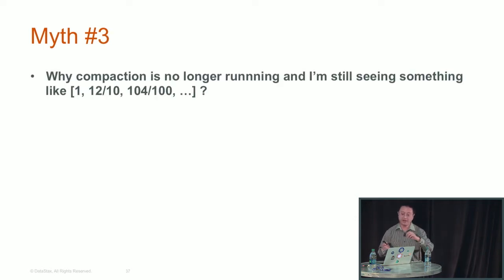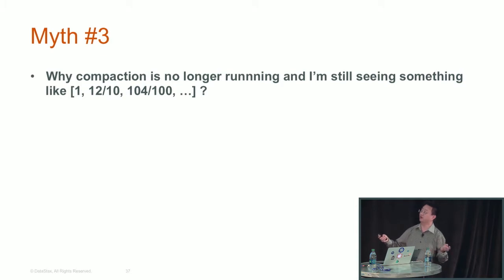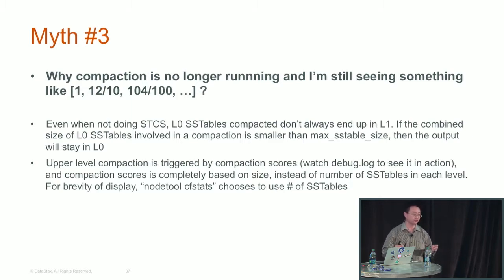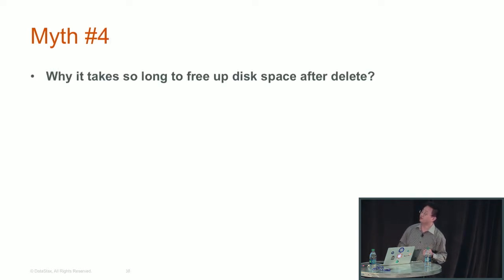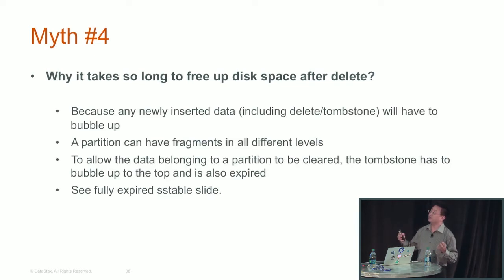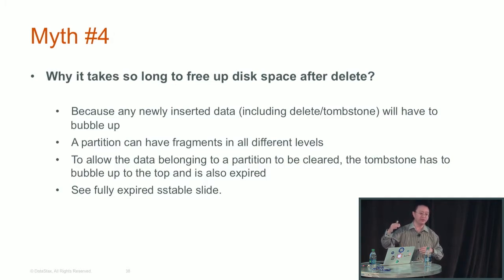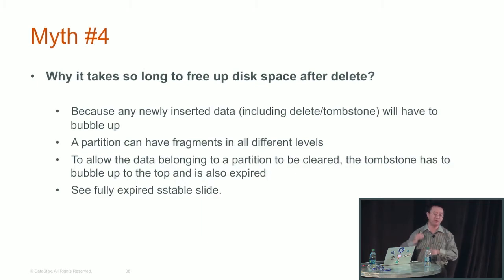Myth three: why is compaction no longer running even though I see something like 12 over 10 SSTables? That's based on compaction score calculation. If those 12 SSTables add up to less than 1.6 GB in total size, the compaction score for L1 stays below 1.001 and no compaction is triggered. Myth four: why does it take so long to free up space after deletes? Because all deletes, like freshly inserted data, always enter L0 first and have to wait to bubble up. If older data sits at a higher level, a tombstone can't be dropped until it bubbles all the way up to that level.